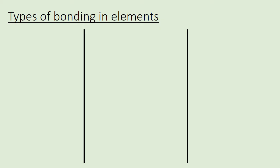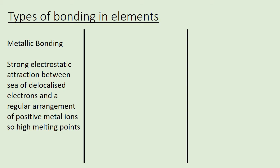Let's look at the types of bonding possible in elements. We can classify elements as metallic or non-metal. If the element is a metal, that's fairly straightforward because the bonding has to be metallic bonding. All metallic elements consist of metallic bonding, which is a strong electrostatic attraction between the sea of delocalised electrons and the regular arrangement of positive ions, which means metals have high melting points. We'll also look at metals in more detail later on.